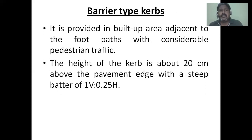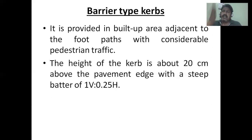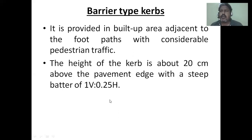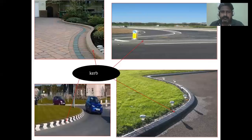Barrier type kerb is provided in built-up areas adjacent to footpaths with considerable pedestrian traffic. The height of the kerb is about 20 cm above the pavement edge, with a steep batter of 1 vertical to 0.25 horizontal. So there are three types of kerb: low mountable at 10 cm, semi-barrier at 15 cm, and barrier at 20 cm.